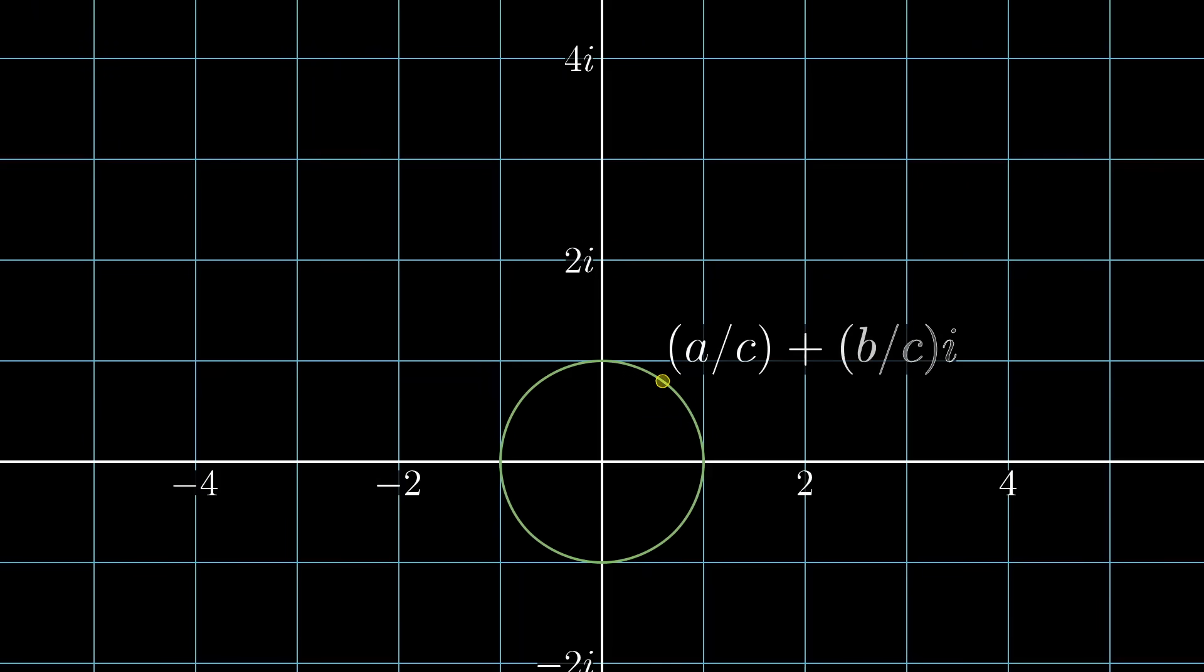Take any one of those rational points and draw a line between it and the point at negative one. When you compute the rise over run slope of this line, the rise between the two points is rational and the run is also rational, so the slope itself is just going to be some rational number.